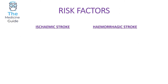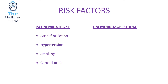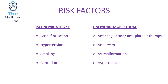Risk factors for ischemic stroke include atrial fibrillation — a major source of thromboemboli — hypertension, smoking, and carotid bruit. Risk factors for hemorrhagic stroke include anticoagulation or antiplatelet therapy, ruptured aneurysm (for example, a berry aneurysm in the circle of Willis in a patient with polycystic kidney disease), AV malformations, and hypertension.